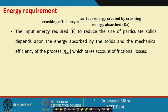The input energy E required to reduce particle size depends on the energy absorbed by the solid and frictional losses in the equipment. Mechanical efficiency (η_m) is taken into consideration to account for frictional losses from rotating machine parts. The input energy that reduces particle size depends on the energy absorbed for creating the surface area and the mechanical efficiency of the process.